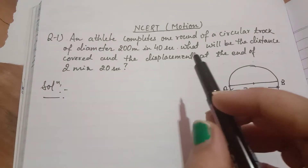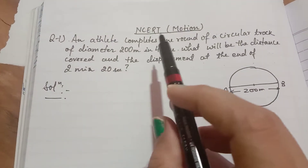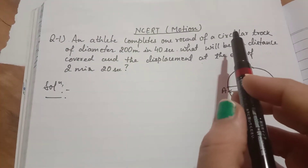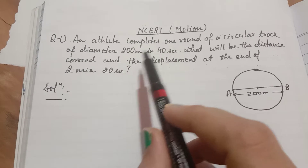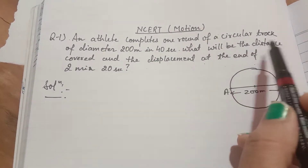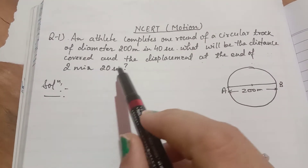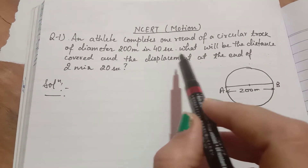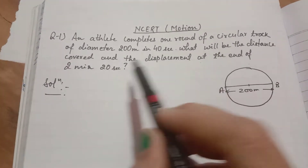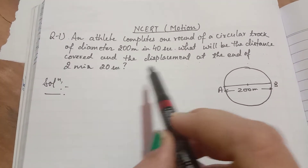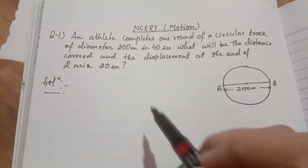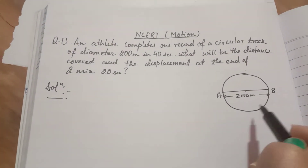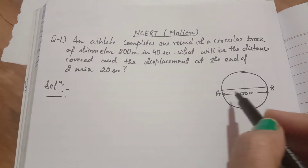The first question in CRT chapter motion: an athlete completes one round of a circular track of diameter 200 meters. What will be the distance covered and the displacement at the end of 2 minutes 20 seconds?